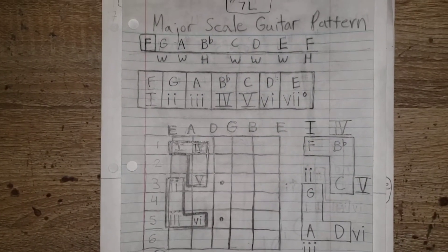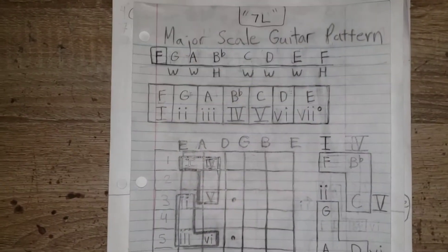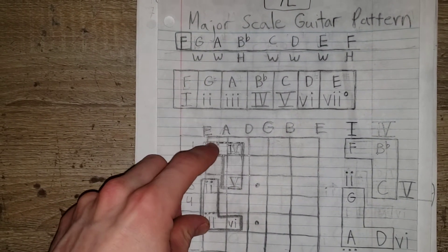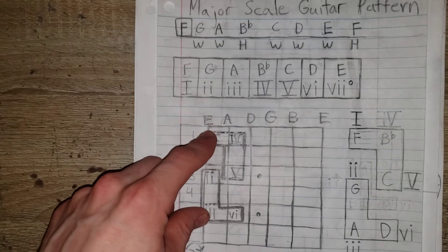So what we do is we get a scale. In this case, we got F. I chose F because F is your first fret of your E string. E, F.